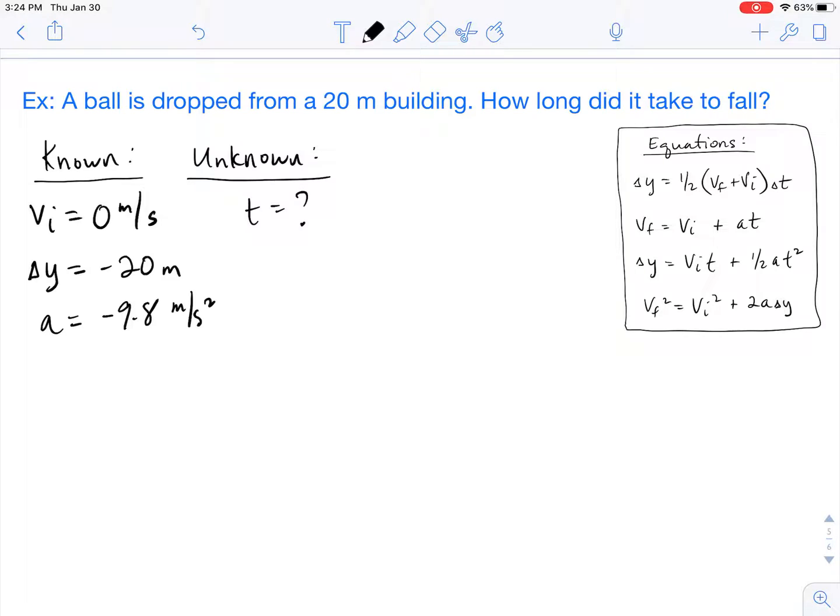With these free fall problems you have really an option of four different equations to use. And so the way that I teach it is based on what you have listed for your knowns and unknowns. Whatever is not listed you're going to use the equation that doesn't have that variable in it.